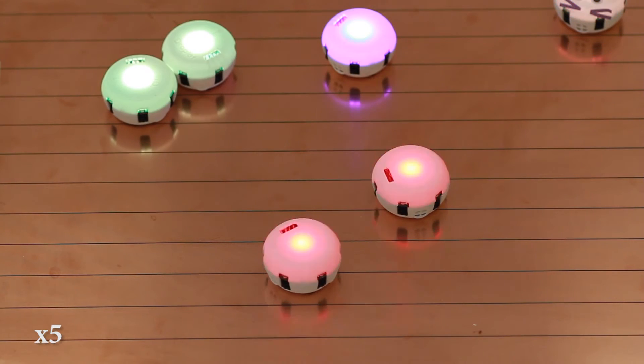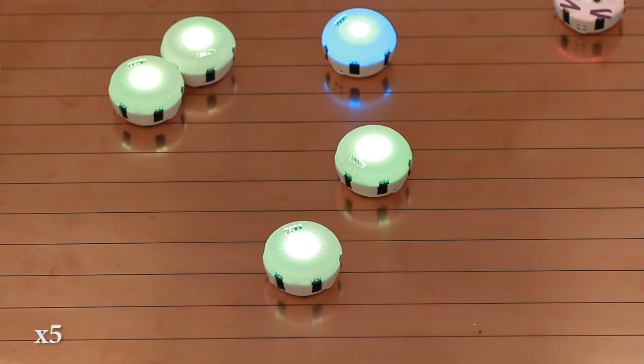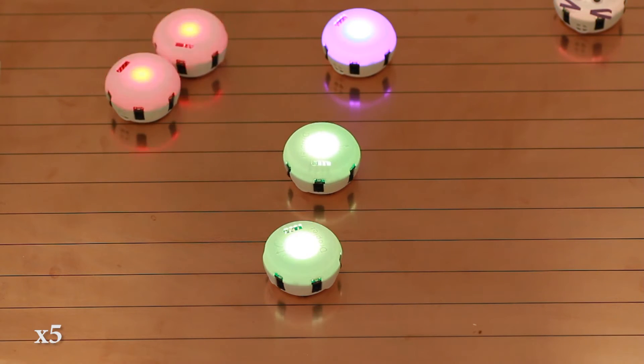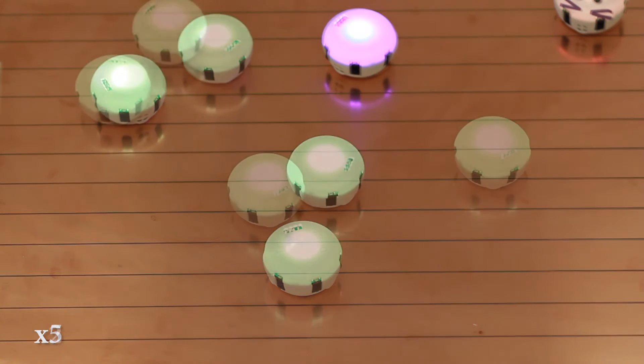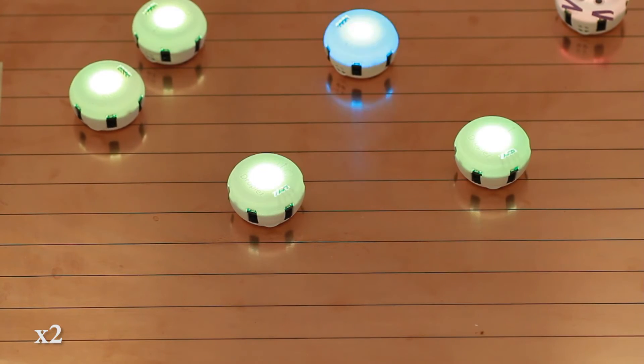Electronegativity is the tendency of an atom to attract shared electrons. It determines bond strength and whether a bond is covalent or ionic. This is represented by the synchronized red blinks.